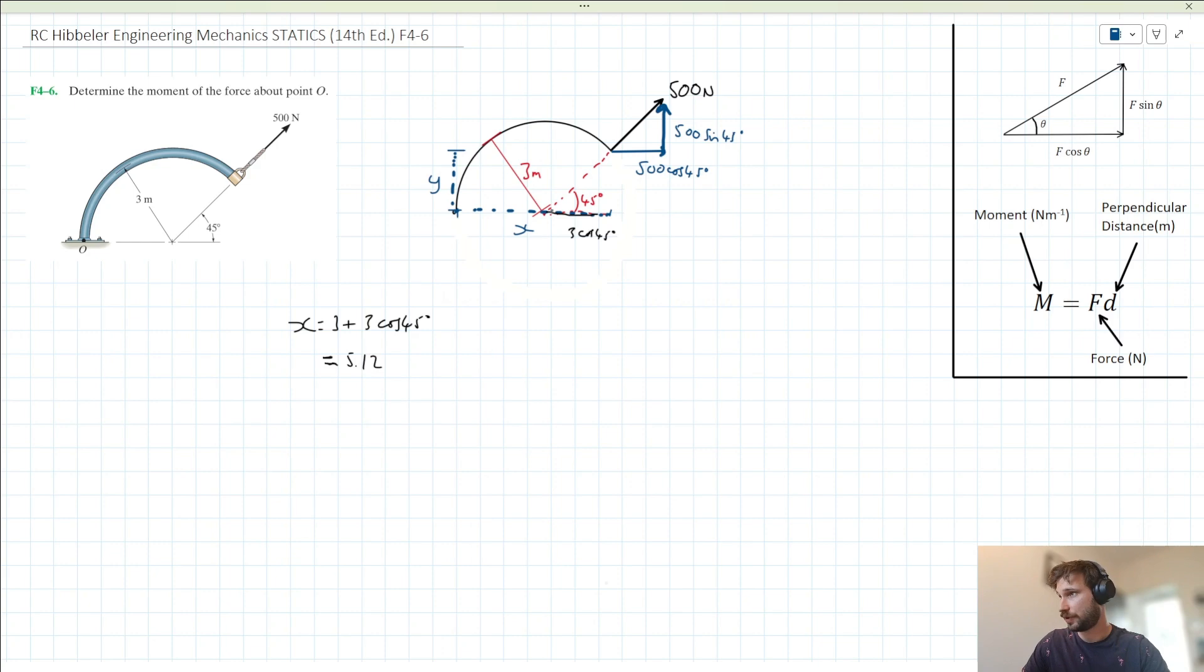And then for y, we know that we would have the vertical component of this vector here. That would be 3 sin 45. So we don't need to decimalise it, let's just say y is equal to 3 sin 45.